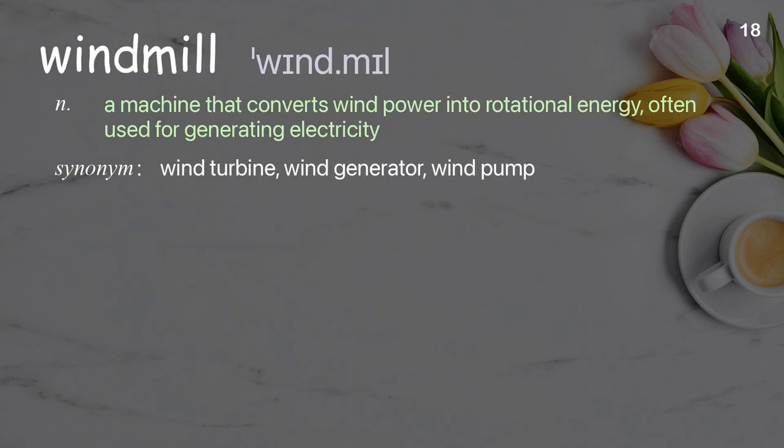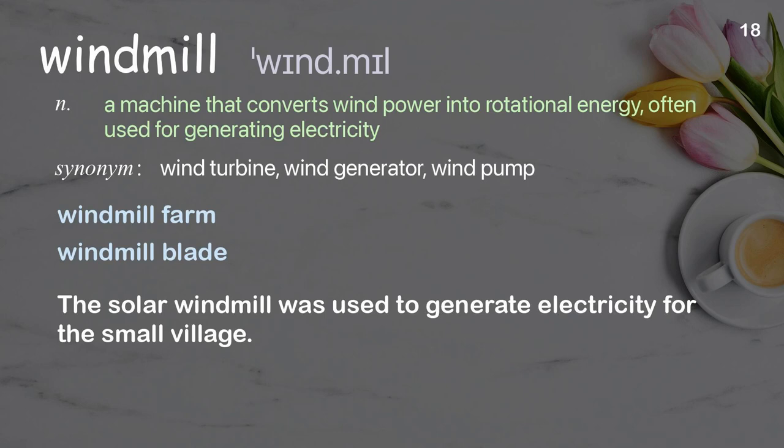Windmill: A machine that converts wind power into rotational energy, often used for generating electricity. Examples: Windmill farm. Windmill blade. The solar windmill was used to generate electricity for the small village.